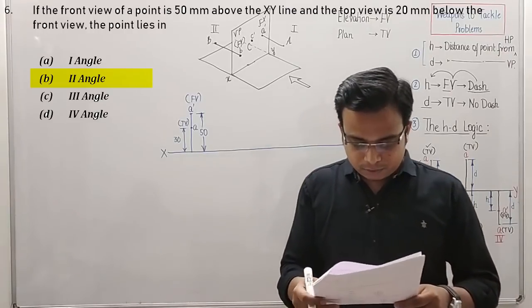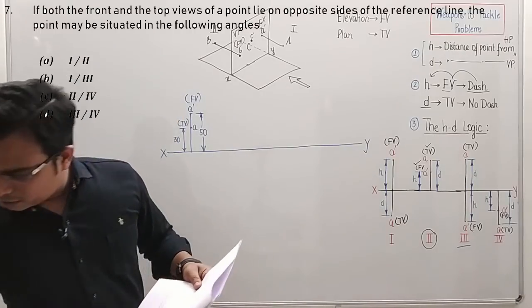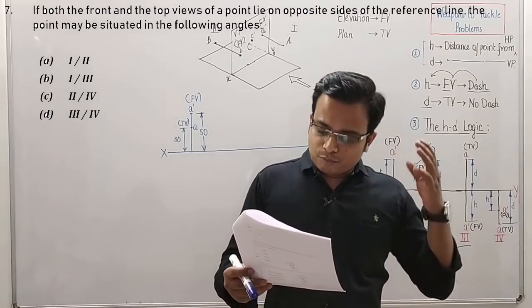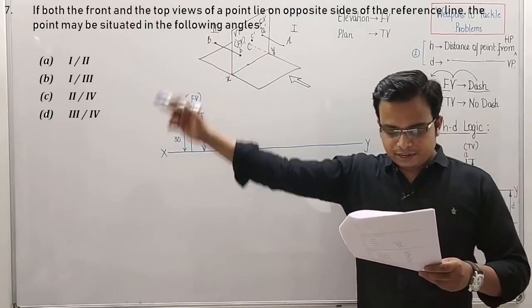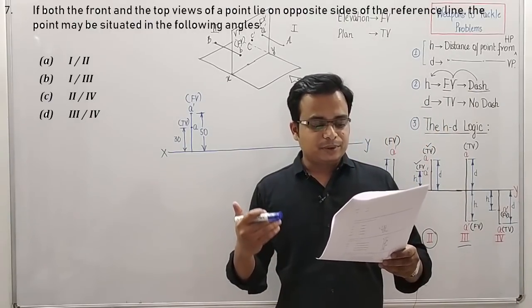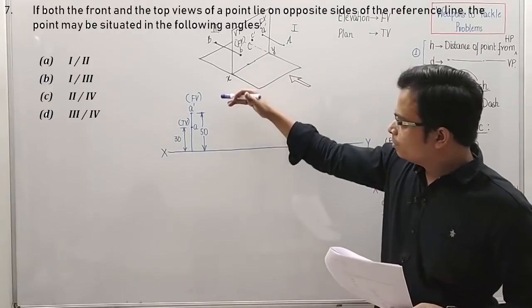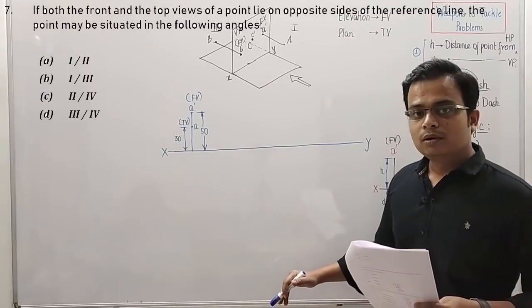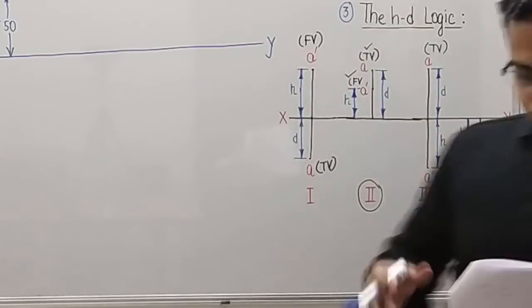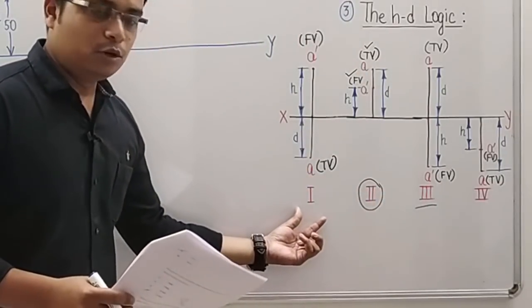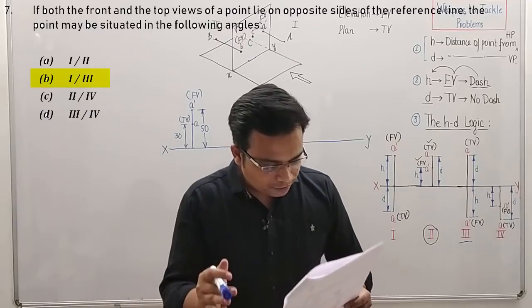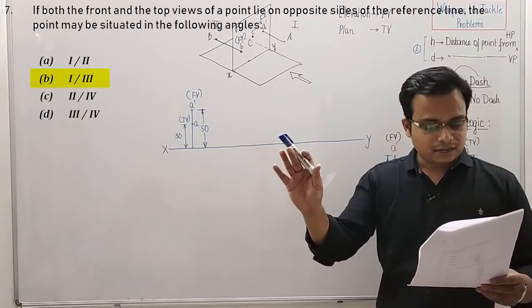Problem number seven: 'If both the front and top views of a point lie on opposite sides of the reference line, the point may be situated in which angles?' If the front view is above and the top view is below, that's first angle projection. If the top view is above and the front view is below, that's third angle projection. Both options are correct, so the answer is option B: first or third angle projection.